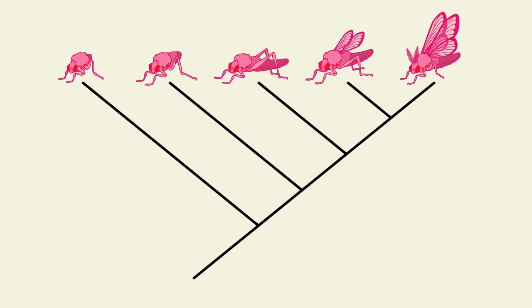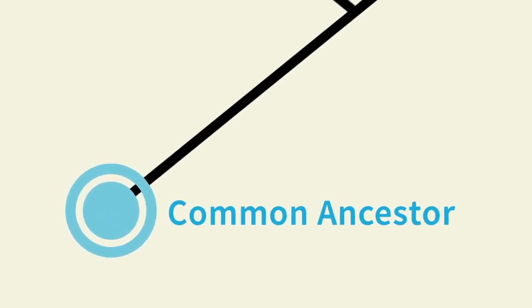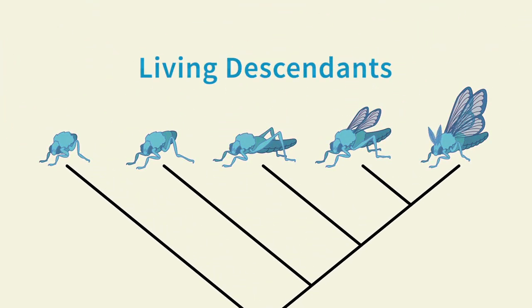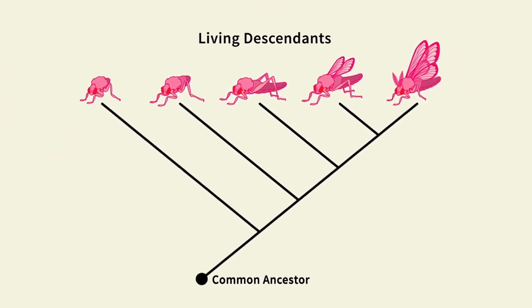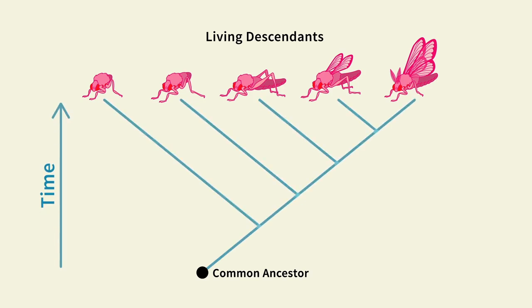This diagram is a best guess at how these creatures may be related. The base represents a hypothetical common ancestor, and the organisms at the tips represent living descendants. The branches represent reproductive lineages and how they split over time. Starting at the bottom, or farther back in time, we can see that there was just one reproductive lineage.